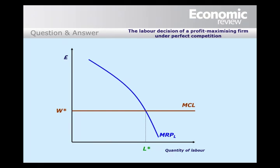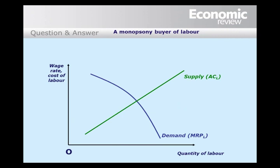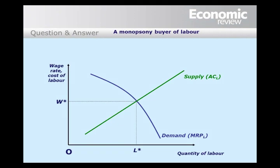However, suppose the firm is the only buyer of a particular type of labor. Such a market is called a monopsony. In such a market, the firm faces the market supply curve of labor, which is likely to be upward sloping — given by the average cost of labor curve. If the firm wishes to hire more workers, it must offer a higher wage. In a perfectly competitive market, the equilibrium would be where demand equals supply, with wage W* and employment at L*.